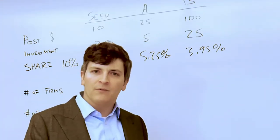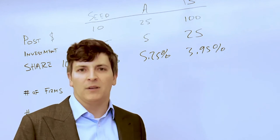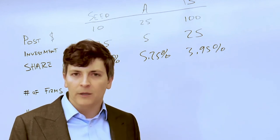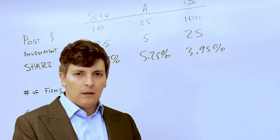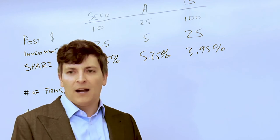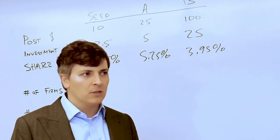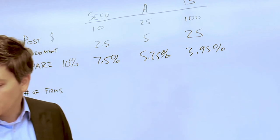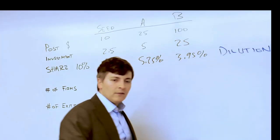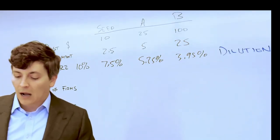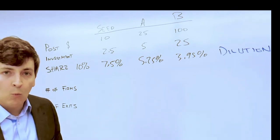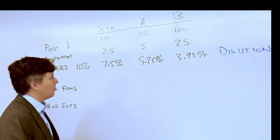So while the founder may believe that the ultimate value of the firm might be a hundred million dollars or five hundred million dollars, your share of that five hundred million dollars or hundred million dollars is getting smaller over time because of dilution. And this is one of the factors that is important to take into account when thinking about what the value of your equity in a startup might be.